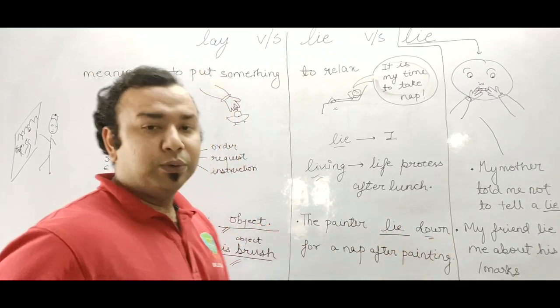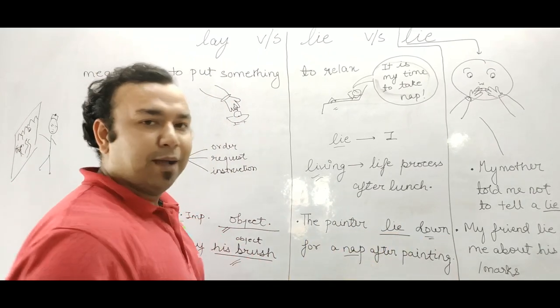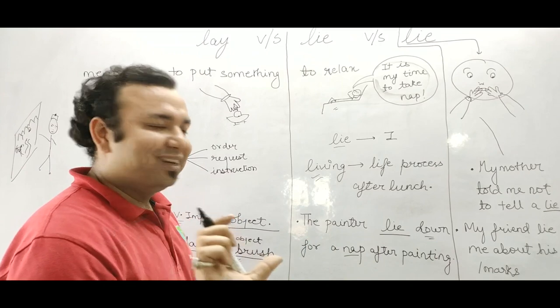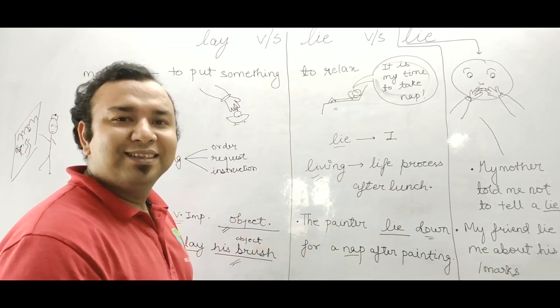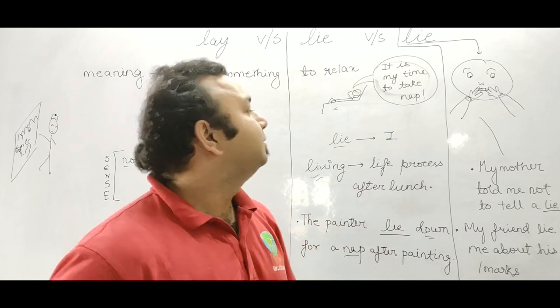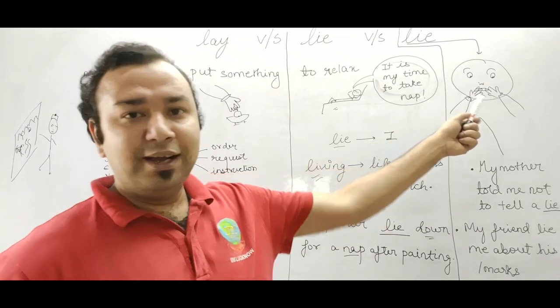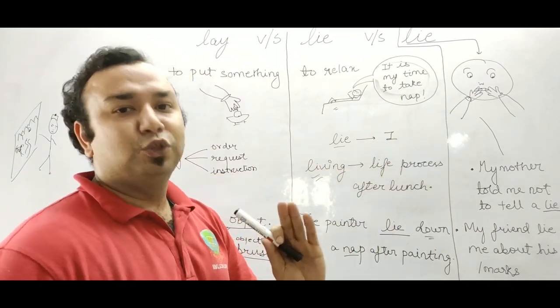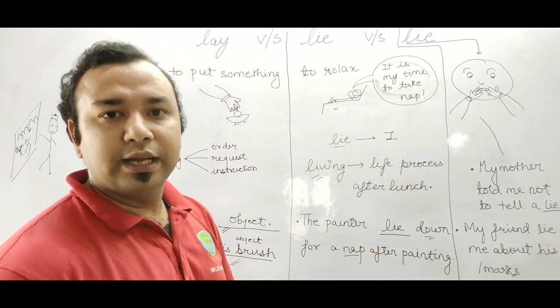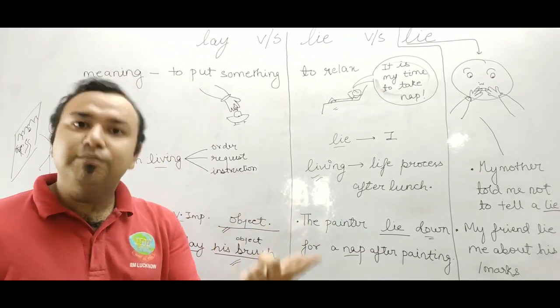Generally, it's down. The painter lie down for a nap. Nap is called a small nap which you take after eating, it's good for your heart. And lie, my mother told me not to lie. My friend lied to me about his marks. So this lie means to be untrue, which you don't say. It's a vicious cycle. You will get trapped. If you say that after one lie, you will say lies.